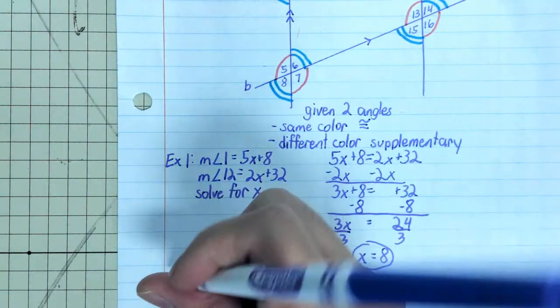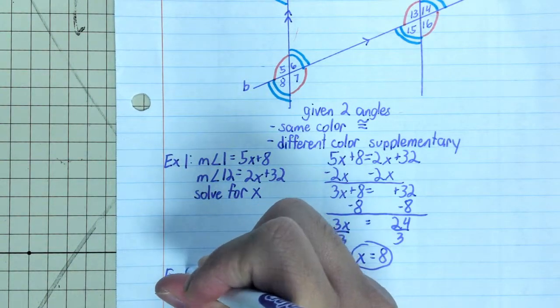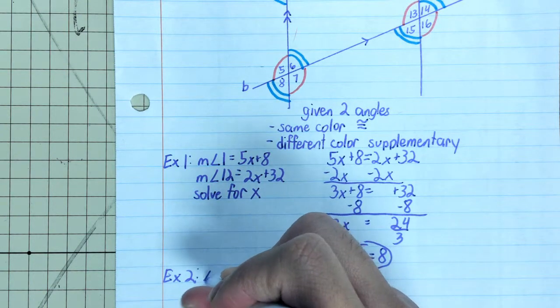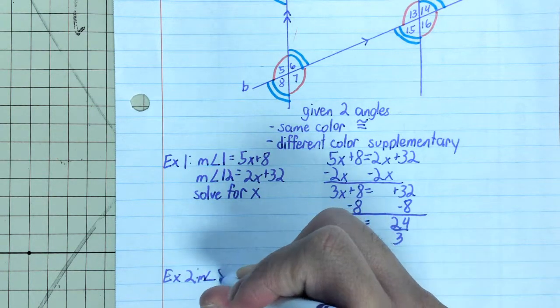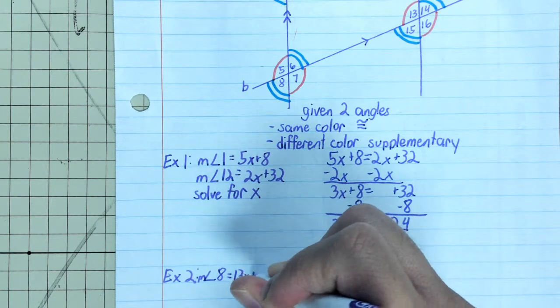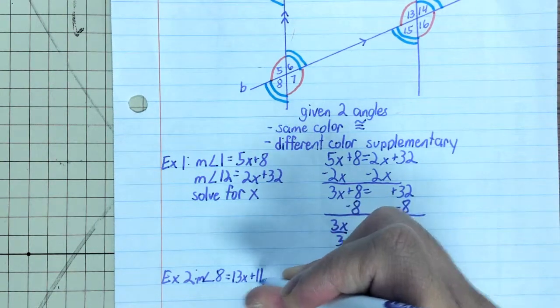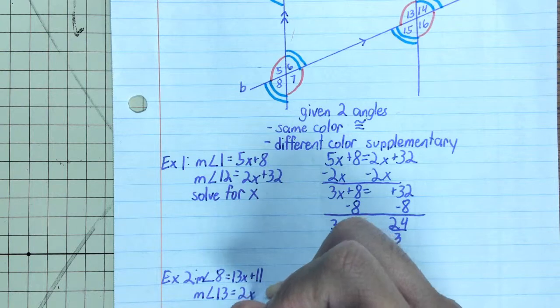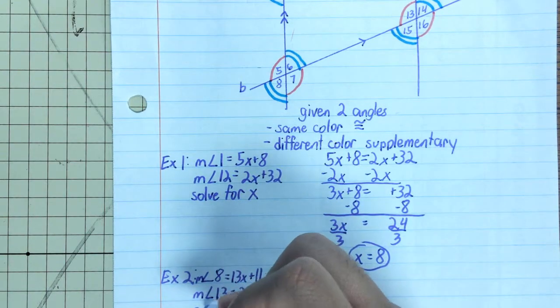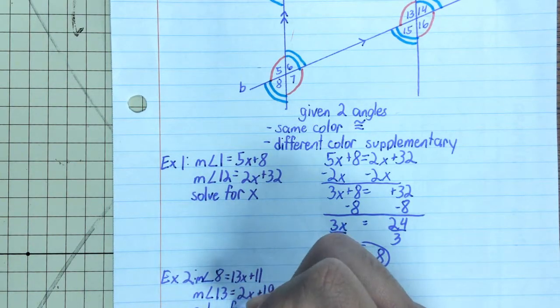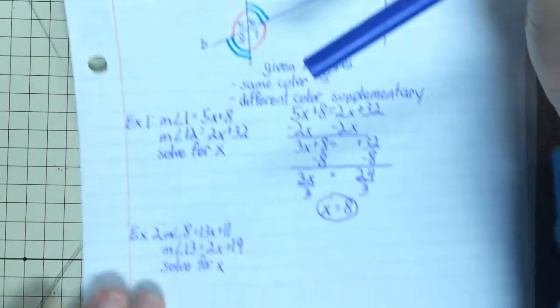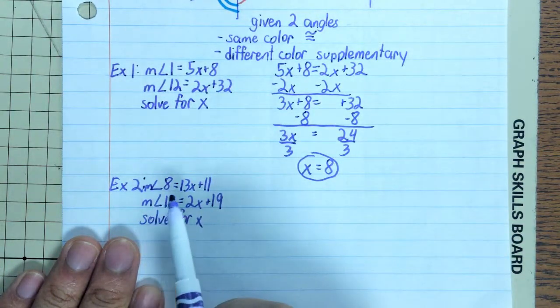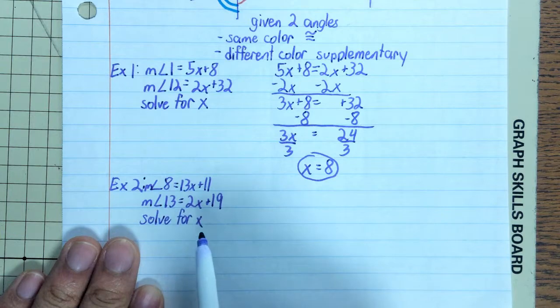Alright, let's do another example. Example 2: what if they told us that the measure of angle 8 equals 13x plus 11, and the measure of angle 13 equals 2x plus 19. And again, we are asked to solve for x.